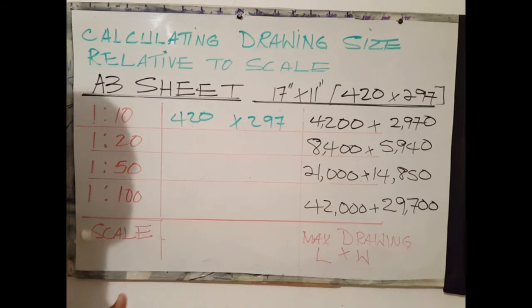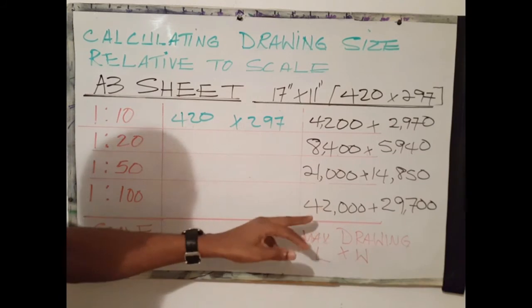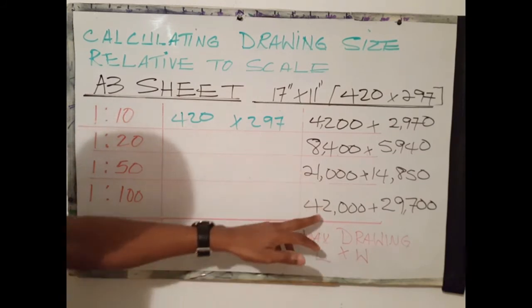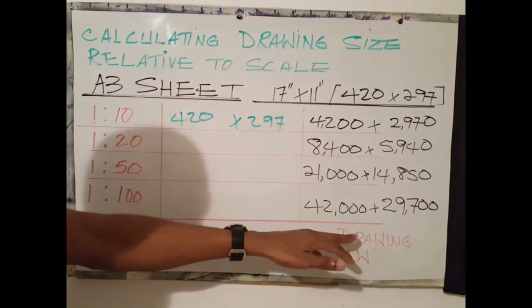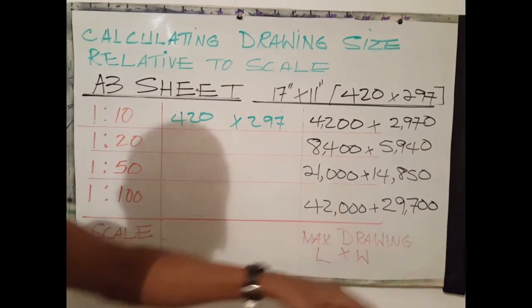In like manner, on a 1 to 100 scale, the maximum length this drawing paper can accommodate is 42,000. Maximum width 29,700 millimeters.